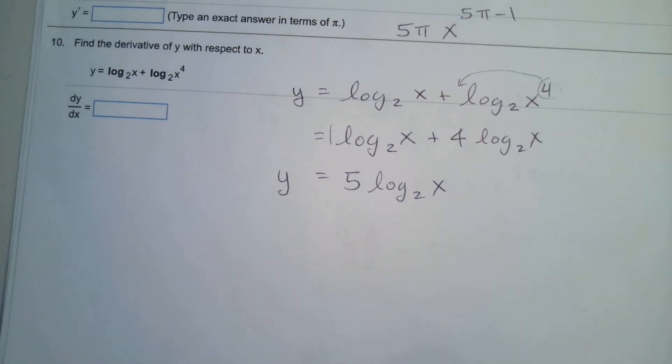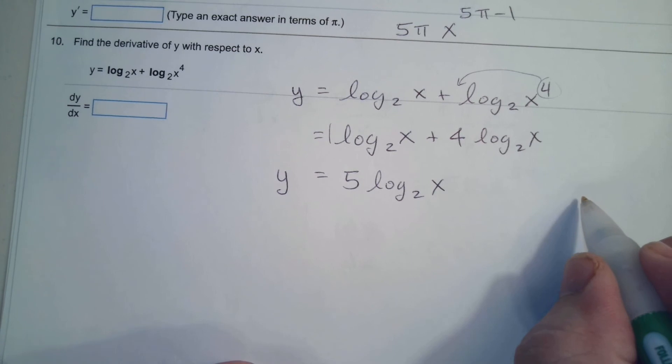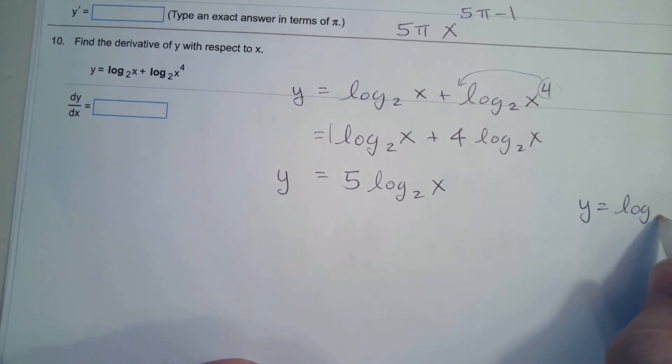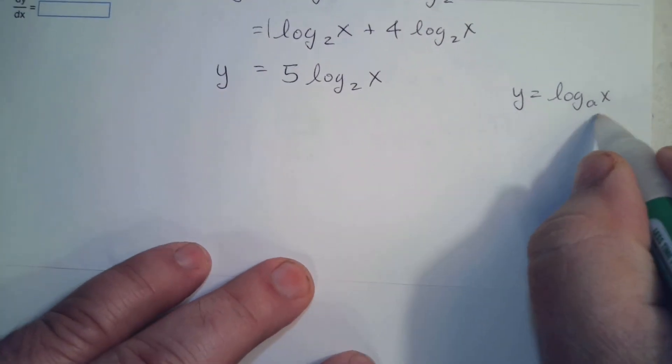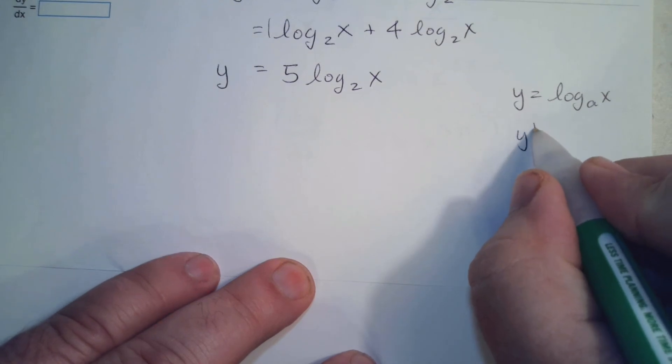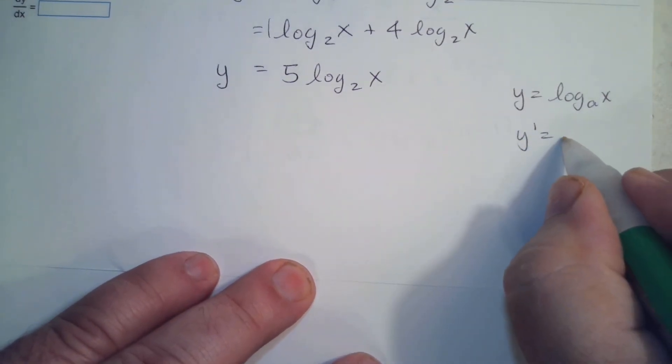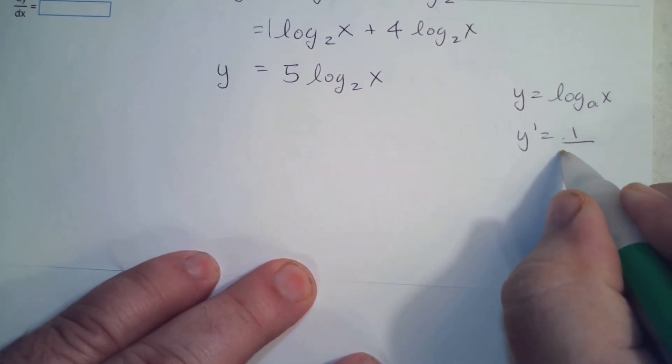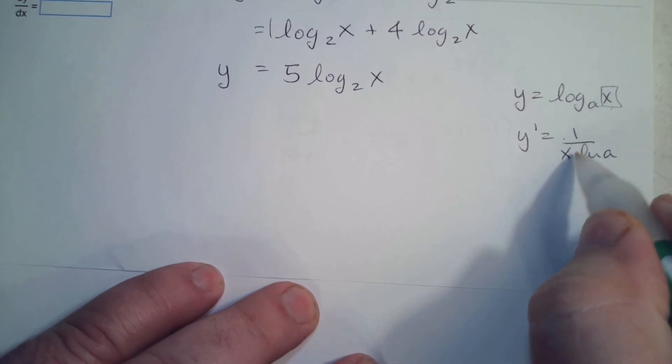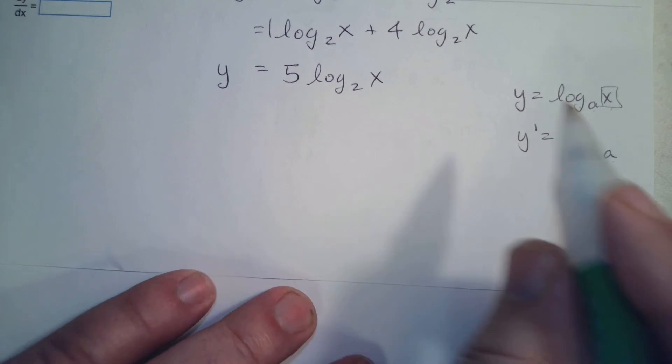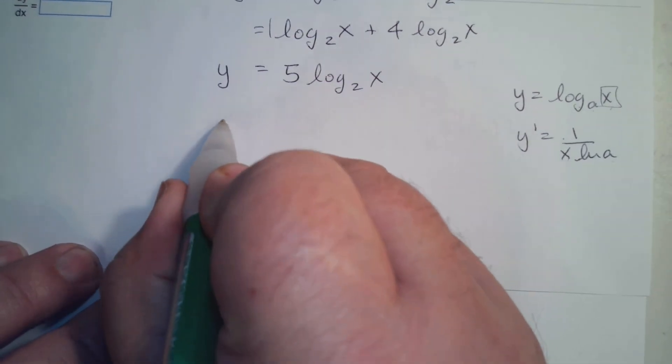But that's not the derivative. Here is the rule: whenever you have log base a of x, the derivative is the natural log of x, which is 1 over x, over the constant natural log of a. So here's the derivative.